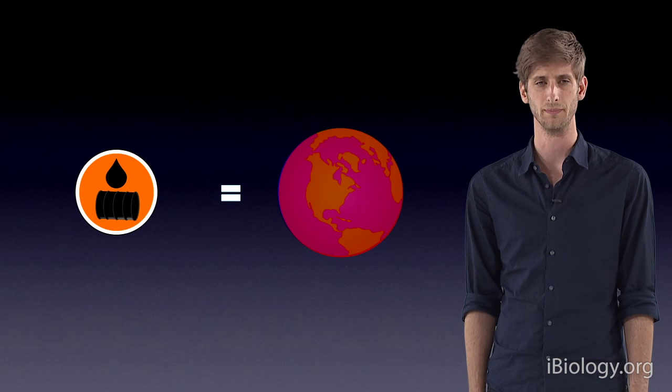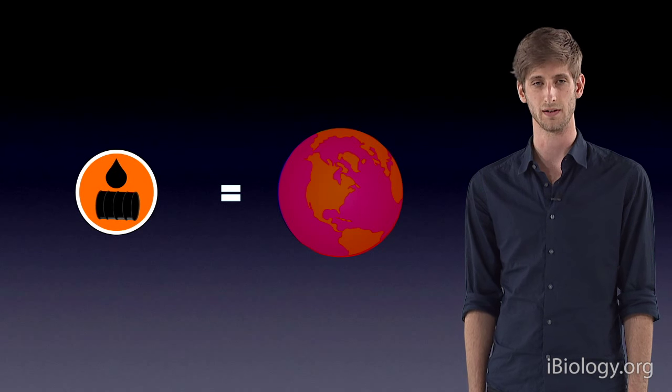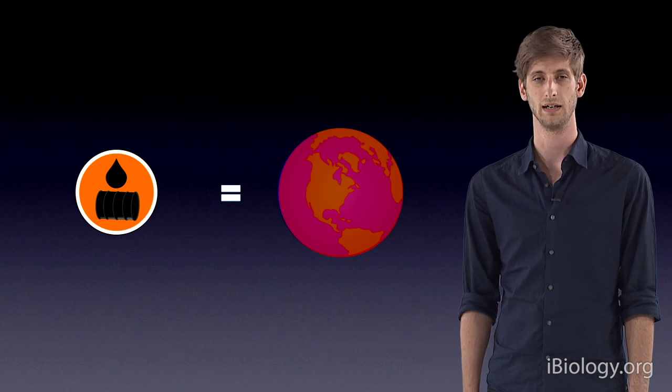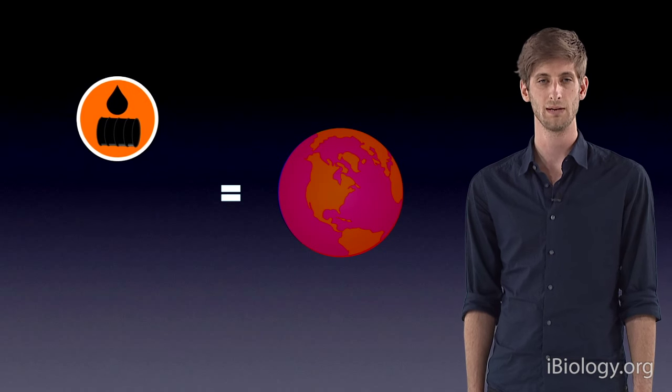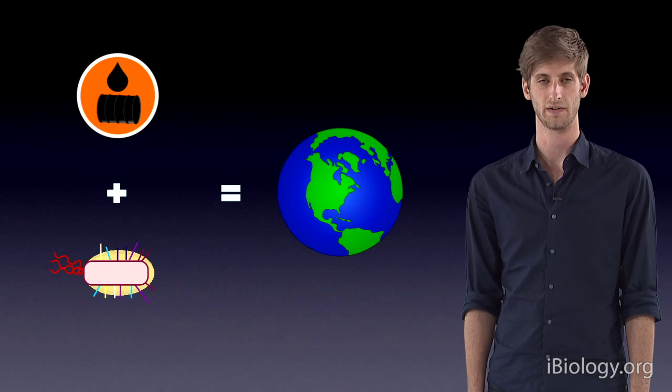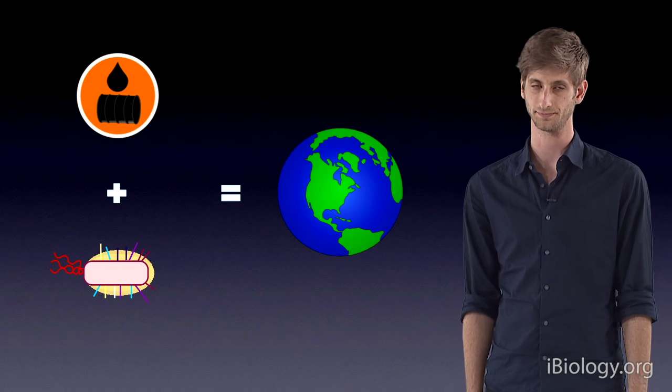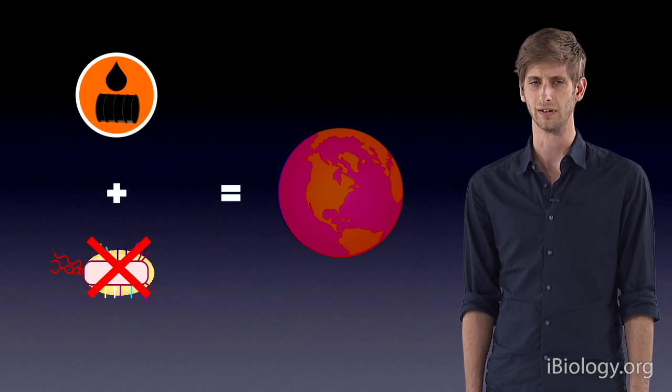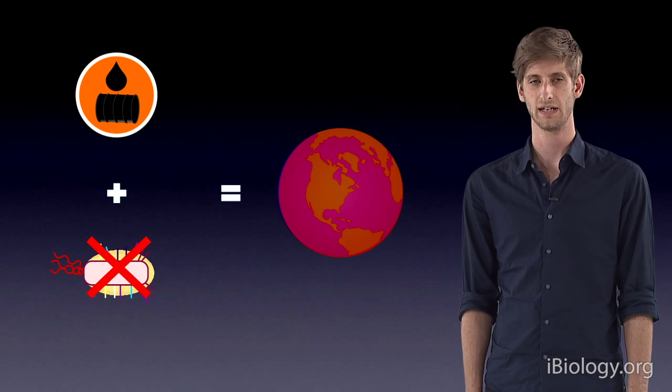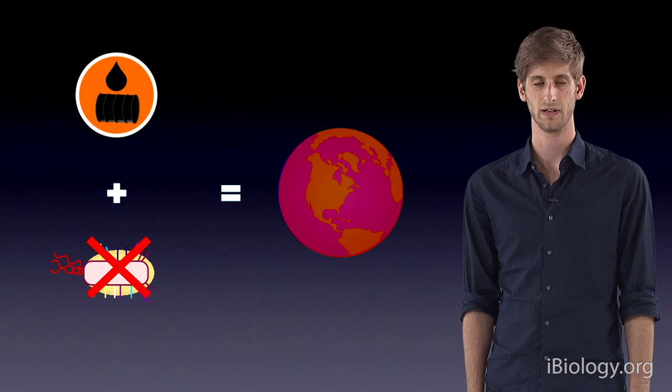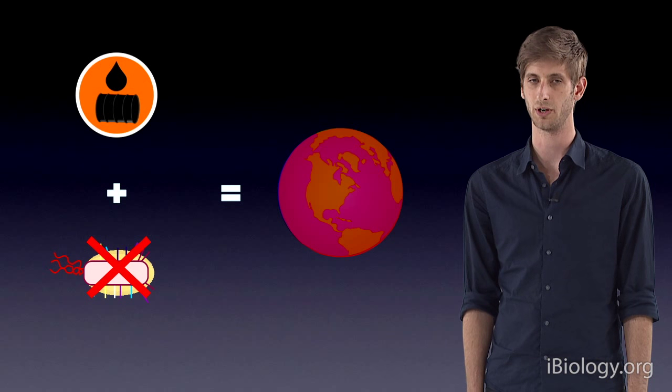For example, imagine we have devised a method for extracting an environmental pollutant. We could implement this method into a single bacteria. However, if one of the intermediate substances in the process is harmful to that bacteria, the process can't be carried through.